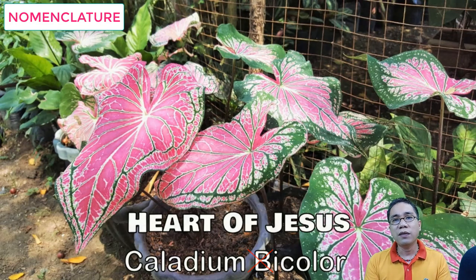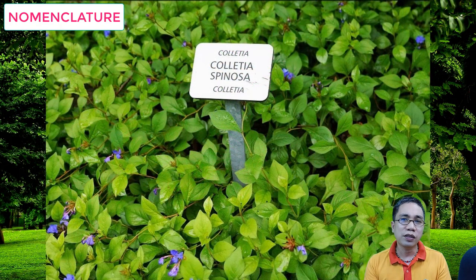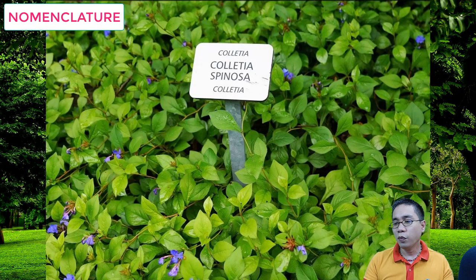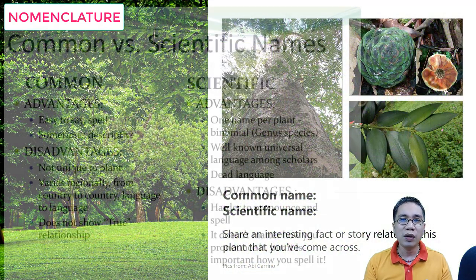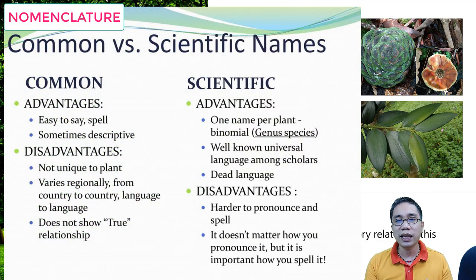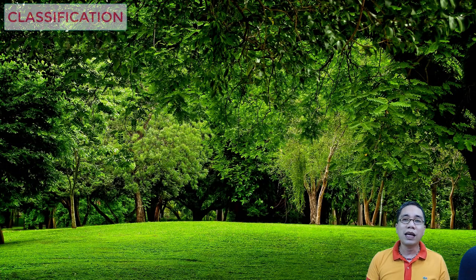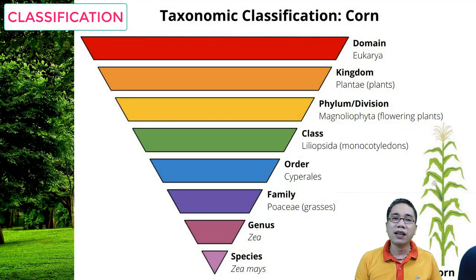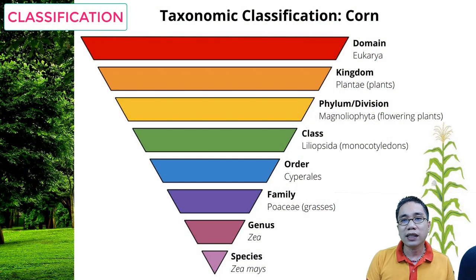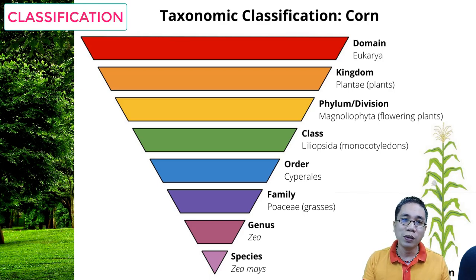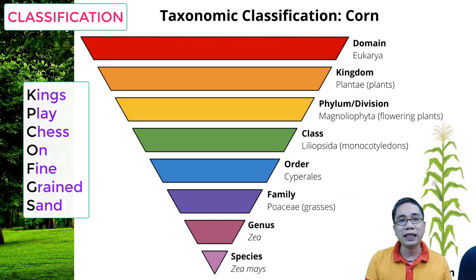Now, it may be practical for simple gardeners to just use common names. But of course, if you want to communicate scientifically, you have to deal with these binomial names — made up of the genus and the species. Then, we have classification. We group plants in a hierarchical order — we call these ranks. And the mnemonic goes this way: kings play chess on fine-grained sand.